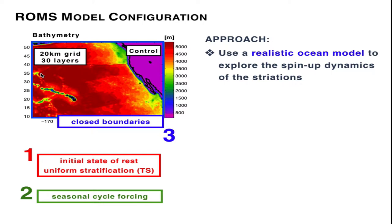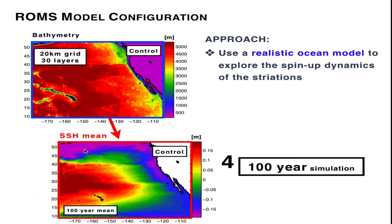This particular control run along with all the sensitivity experiments are integrated for a period of 100 years, so that we can both look at the spin-up dynamics as well as the time equilibrium statistics. If we look at the sea surface height mean, 100-year mean in this region, we find that it reproduces a gyre-scale circulation with an eastern boundary current, a return western boundary that is more confined here at 180 degrees. If you compare this type of sea surface height mean with observations, this compares very well, for example, with the mean dynamic ocean topography, both for the shape of the circulation as well as the magnitude of the circulation.